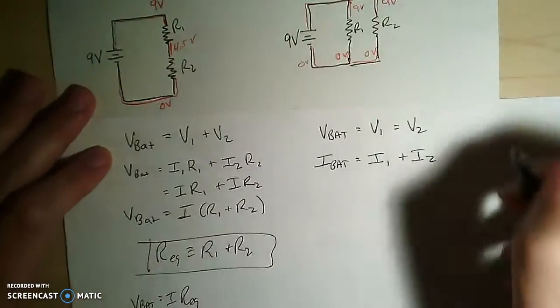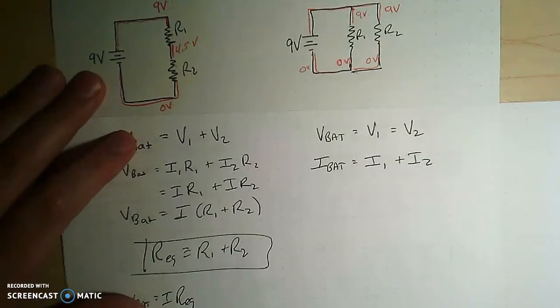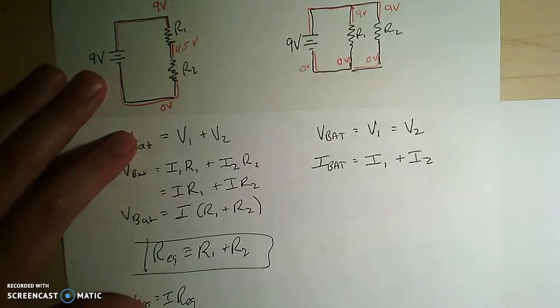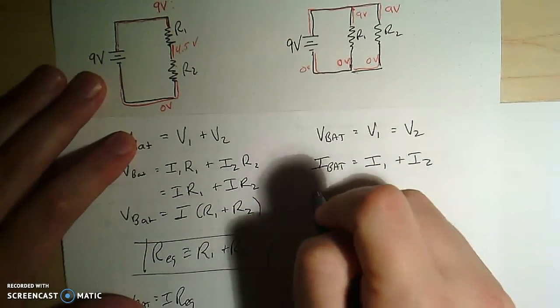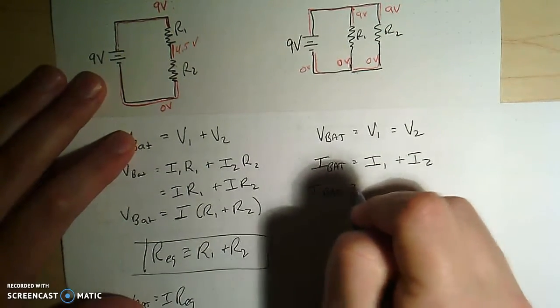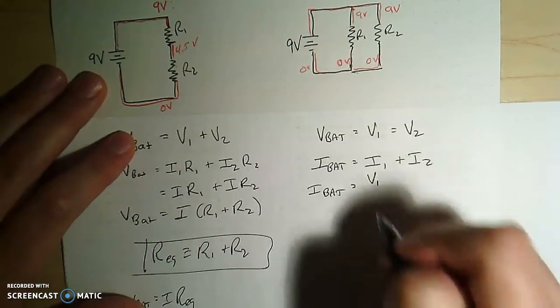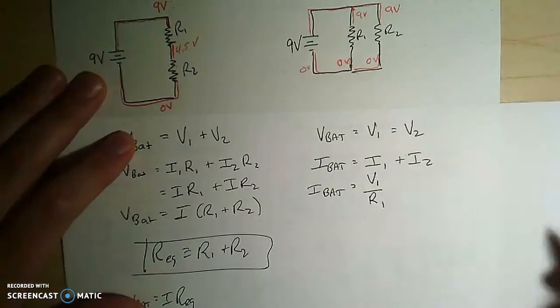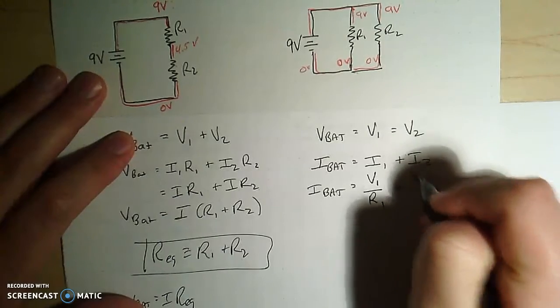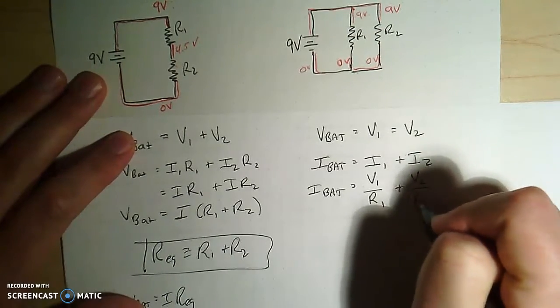Okay, so then what? Well, if V equals IR, then I should be able to say that I equals V over R. So in other words, I can say that the current through the battery is equal to the V of resistor 1 divided by the R of resistor 1 plus the V of resistor 2 divided by the R of resistor 2.